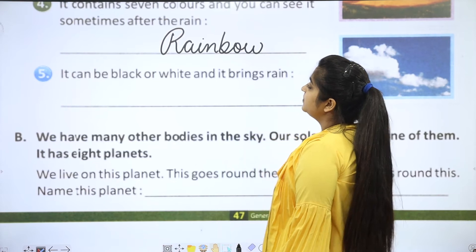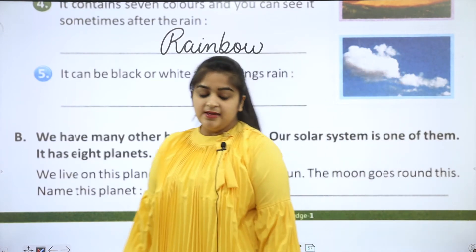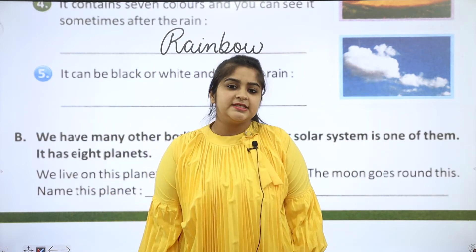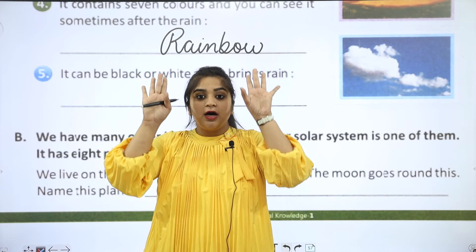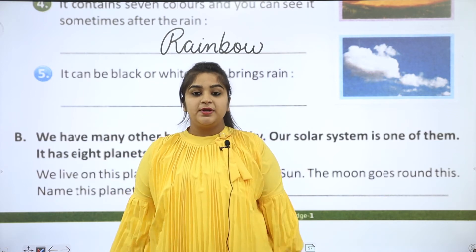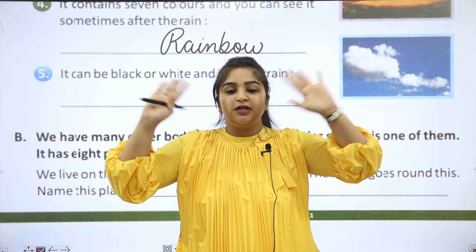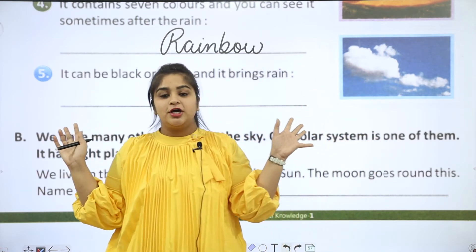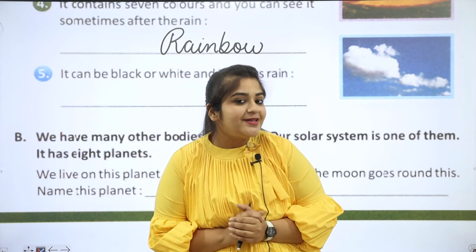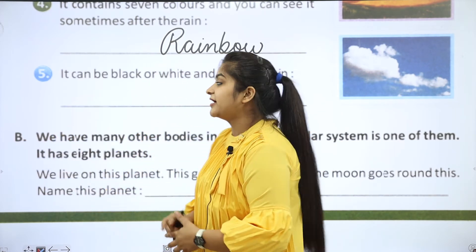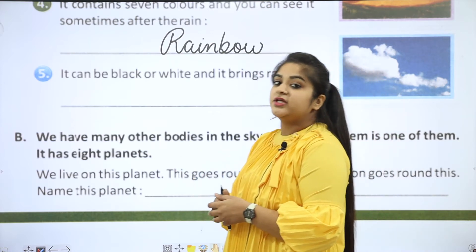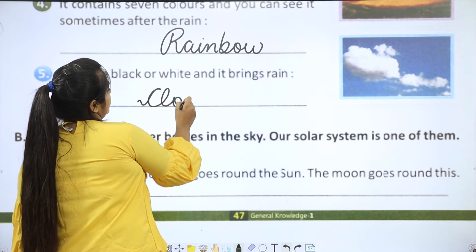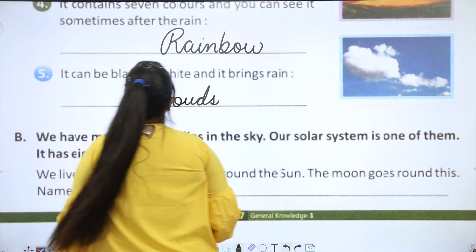It can be black or white and it brings rain. The rain comes from it. When it rains, the sky is so beautiful — it can be black. And what is this black and white thing? It's clouds. So your answer is C-L-O-U-D-S, clouds.